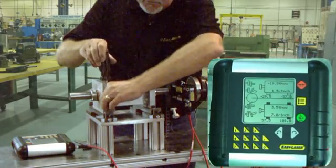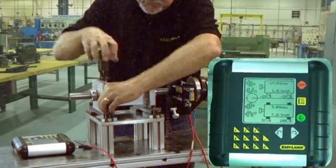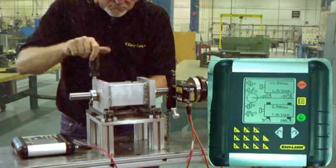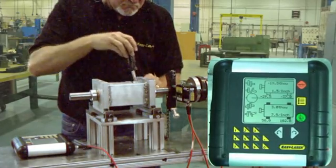We will now make corrections in the vertical plane. After loosening the bolts we can add the amount of shim shown on the screen to both the front and back feet of the machine.